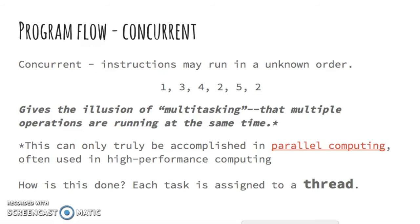Concurrent programming, on the other hand, which includes multi-threading, allows for programs to give the illusion of multitasking — that multiple operations are running at the same time. However, on a computer with one CPU, this is simply an illusion. This computational magic trick is done by prioritizing the tasks that are important to the user and then running the less important tasks in the background.